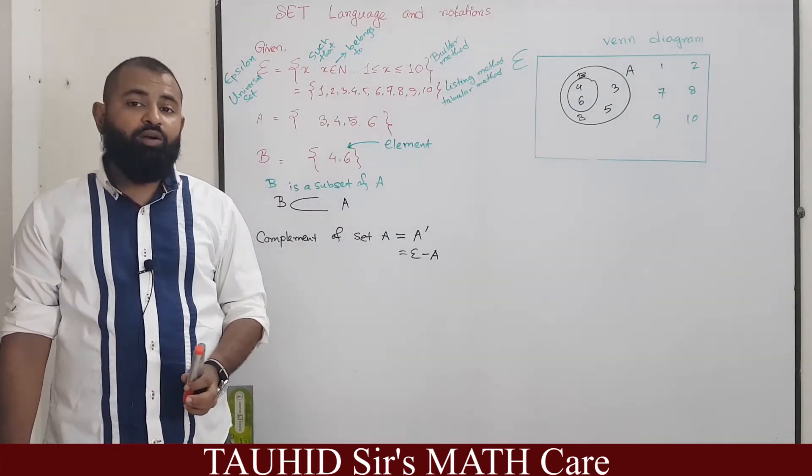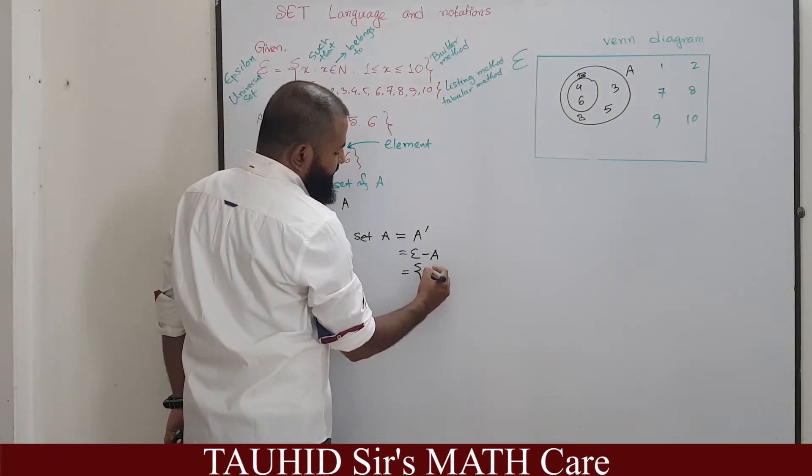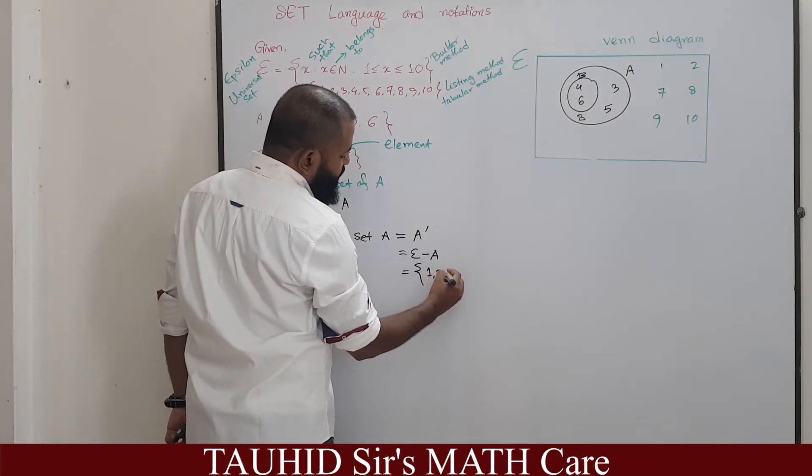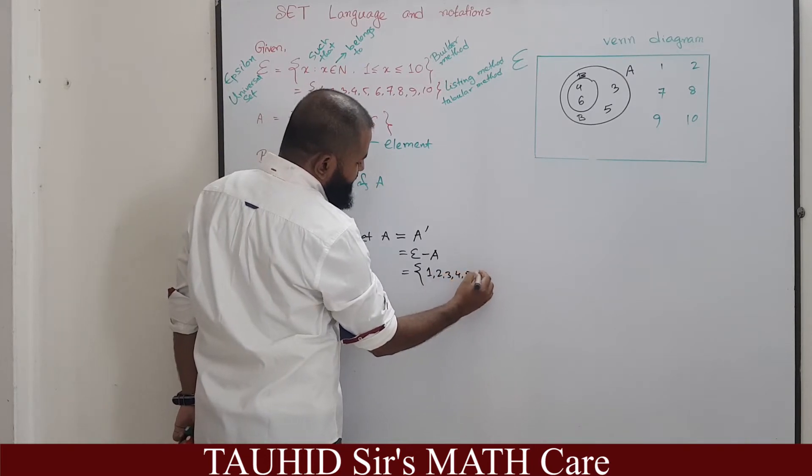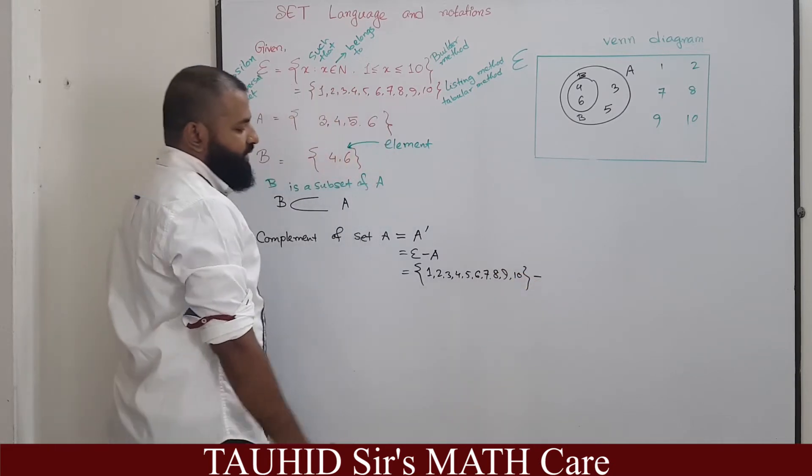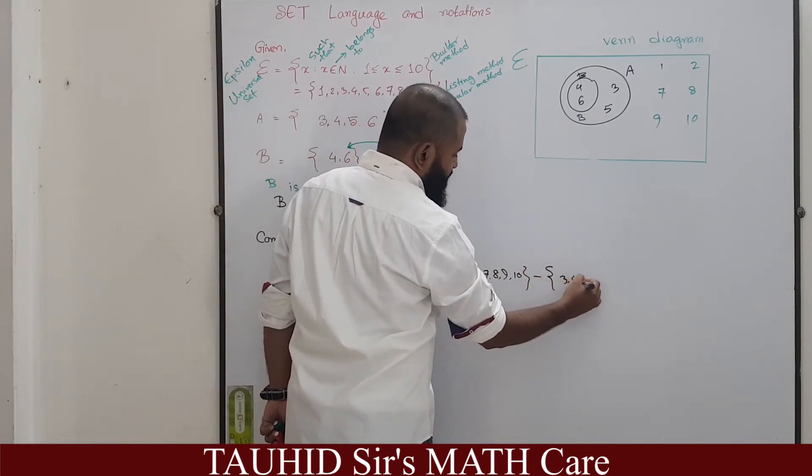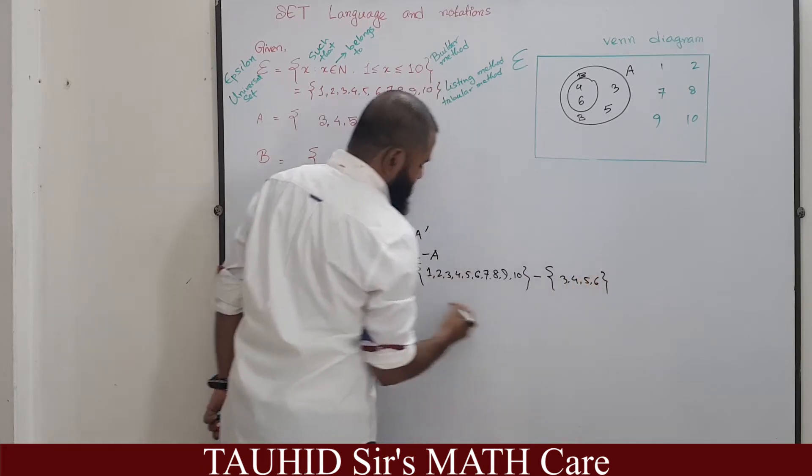That means what does epsilon contain? 1, 2, 3, 4, 5, 6, 7, 8, 9, 10. From this we will subtract the elements of A: 3, 4, 5, 6. So what remain will stay here. 3 will be removed, 4 will be removed, 5 will be removed, 6 will be removed.